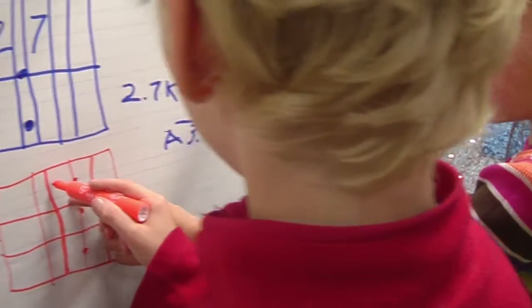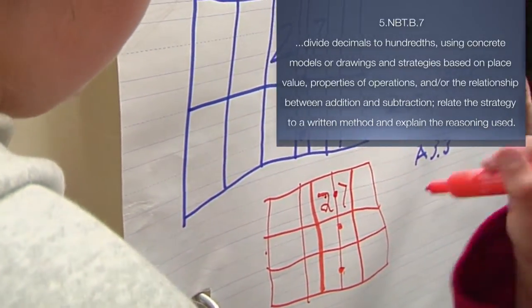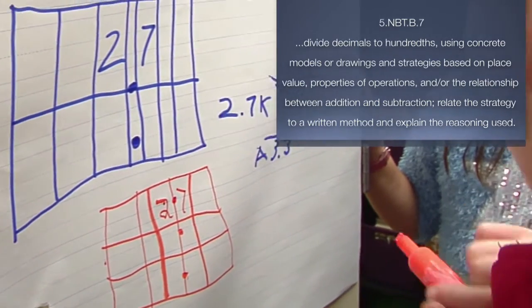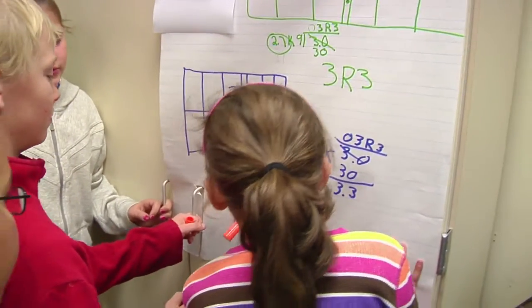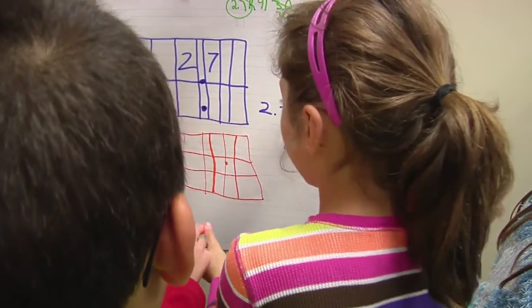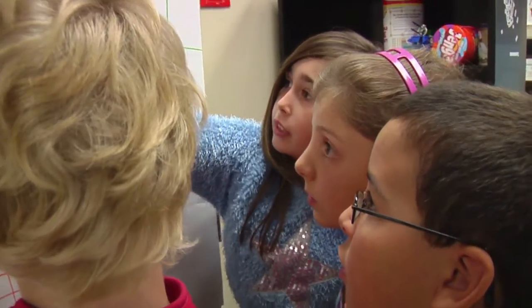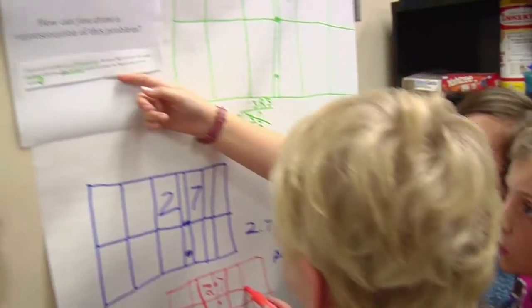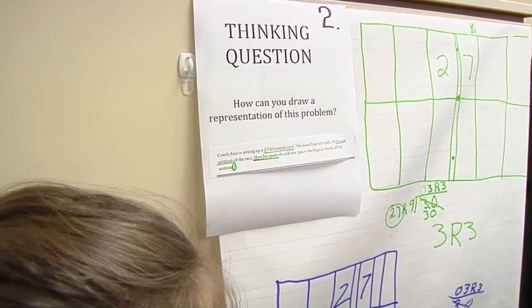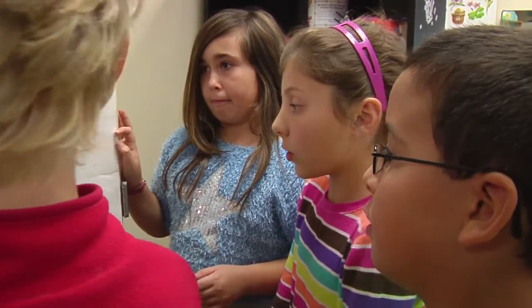Why don't you just draw nine sections and put a mark each time, then count them and put the number under it. So put two point seven. Would it be nine circles? We concur with yours too. We think we should put it in nine sections because it's nine equal sections. It's a 2.7-kilometer race. She uses flags to mark nine equal sections. How far apart should she space the flags? So you draw nine circles, mark them, count them, and write the number down — that's your answer. So can you draw nine circles?